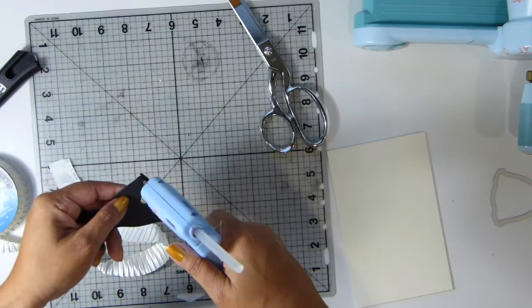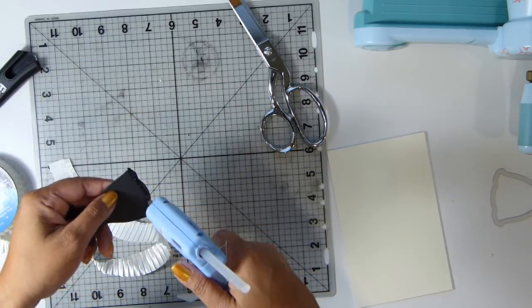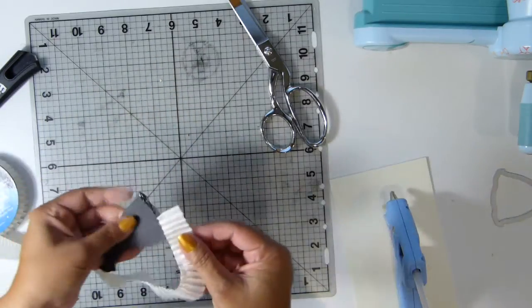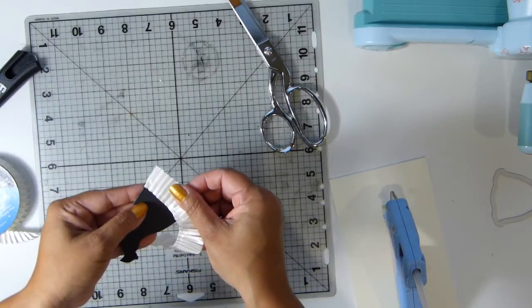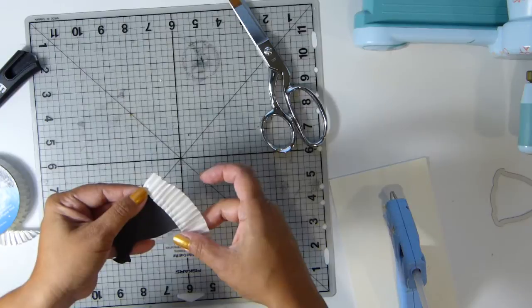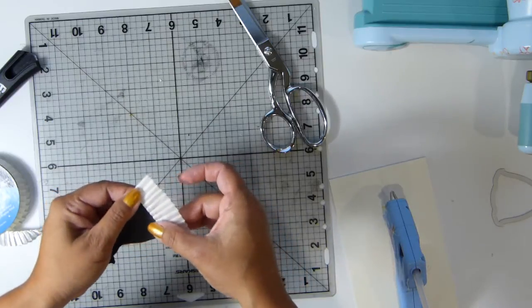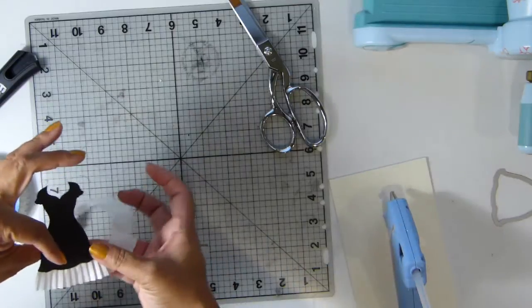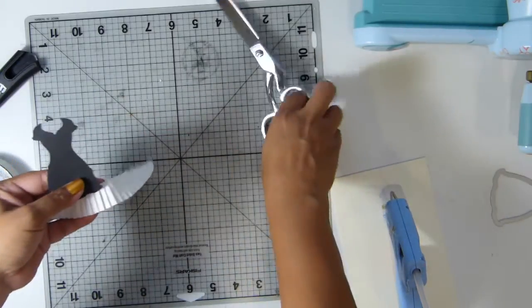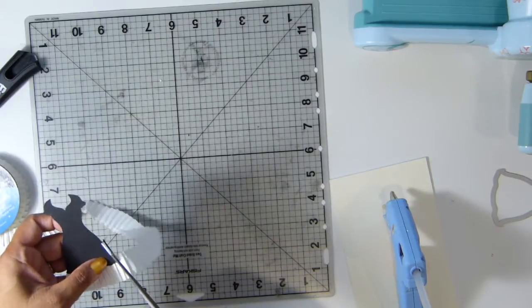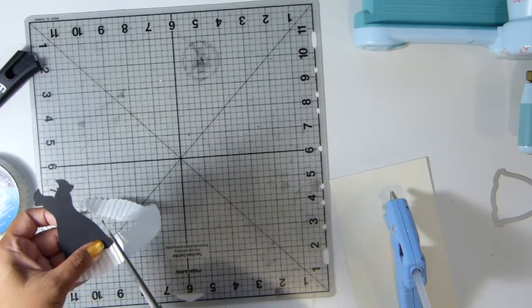So I can adhere the pre-pleated ribbon. You have to work quickly with the hot glue because it dries out really fast. I'm going to go ahead and cut the end here so I have a nice even shape.